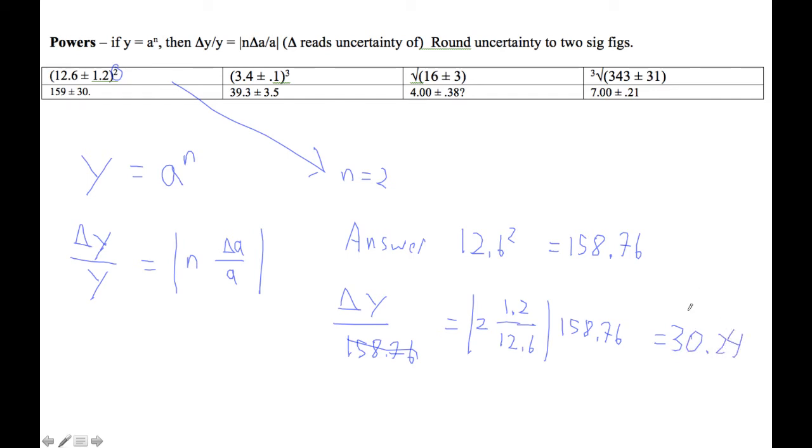So if I round that to two places, I have 30. And this is the one's place, so I round that to the one's place, so that'd be 159.